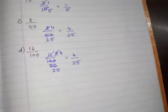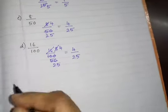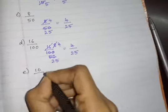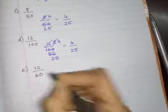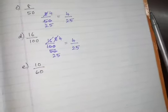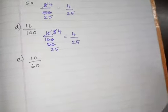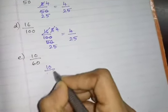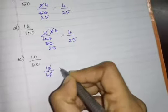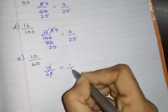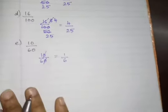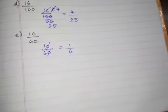Next, E problem: 10 by 60. The zeros cancel, so 1 by 6 is the simplest form of 10 by 60.